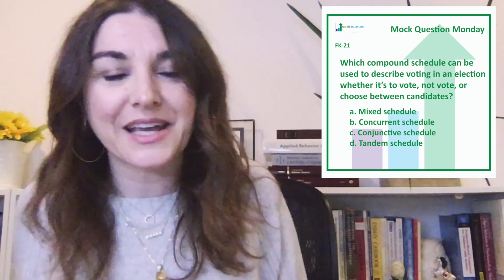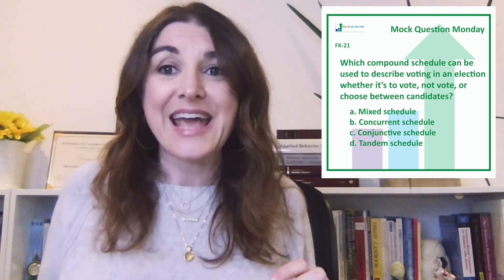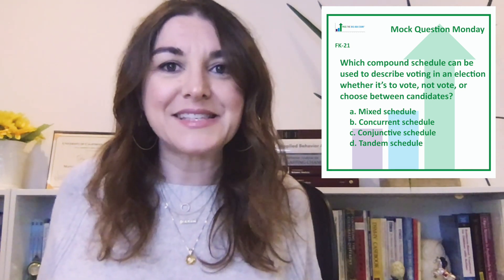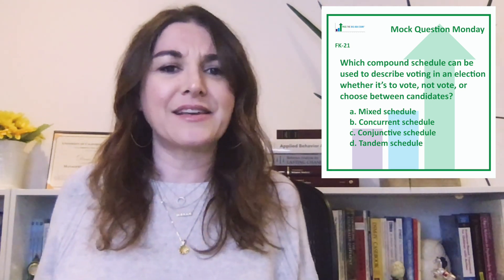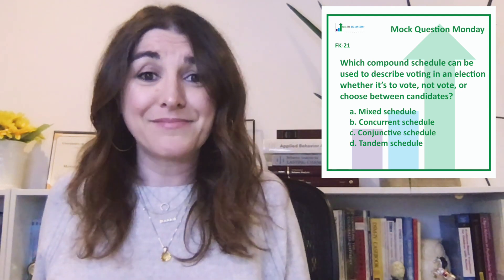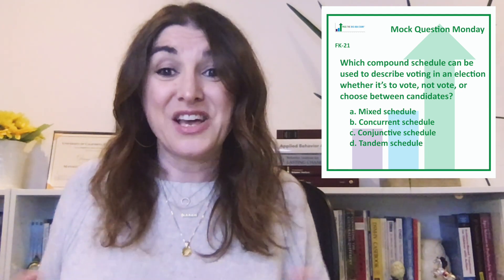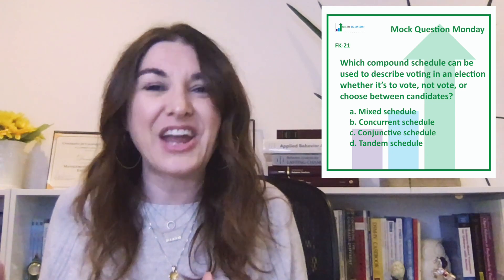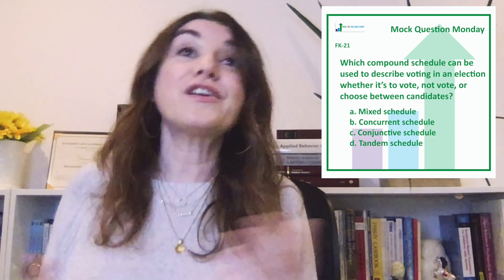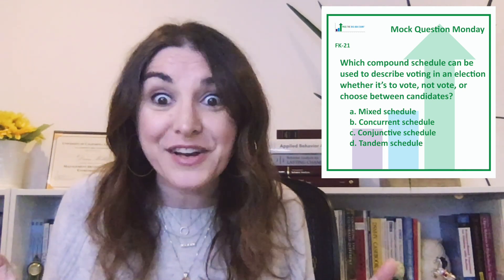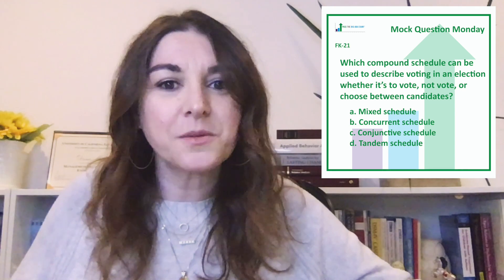Finally, the tandem schedule. Two or more basic schedules of reinforcement are presented and occur successively, just like the chain schedule, except without the SD. Think of this as an unsignaled chain. I call this the frustrating schedule because basic schedules have to occur in a specific order, but each step in that chain does not have an SD — nothing serves as the SD for the next step. So the sequence has to be figured out by trial and error, like a corn maze or figuring out the correct sequence of numbers for a phone number with no hints and no clues. Frustrating! Or imagine a recipe with just the ingredients, but no written recipe. Frustrating.